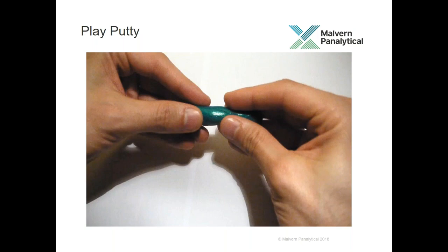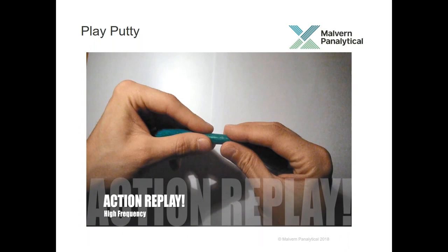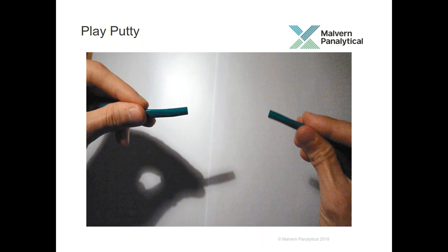When we talk about polymers or property changes as a function of time, silly putty — a polydimethylsiloxane material — is a great example. If you just pull it, it stretches very nicely. But if you pull it very quickly it shatters. So the behavior is significantly different depending on the time element associated with the measurement.